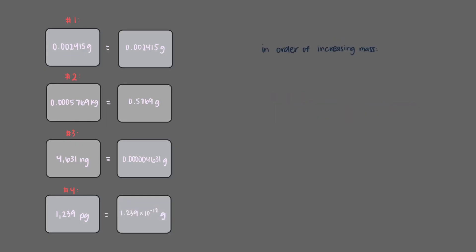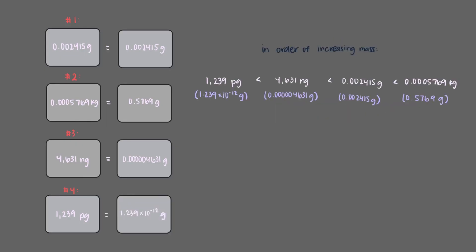If we put the gold nuggets in order of increasing mass, this is what we get. So it's good that we did these conversions before choosing a gold nugget. It may have been tempting to choose the 4631 nanogram nugget in the beginning, since 4631 is the biggest number, but now we know that we have to also take into consideration the units tied to the number before we can make any conclusions.